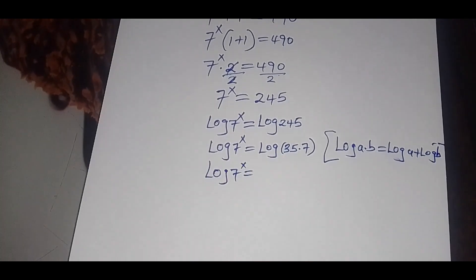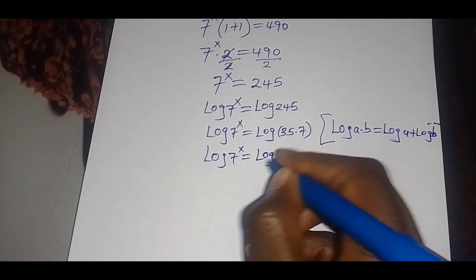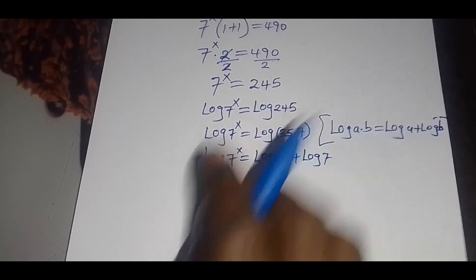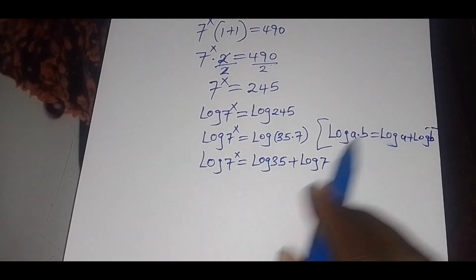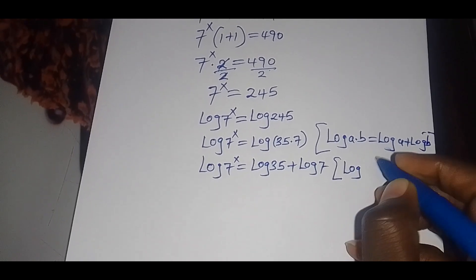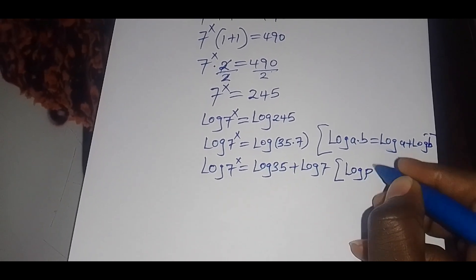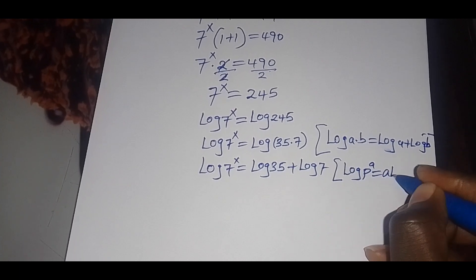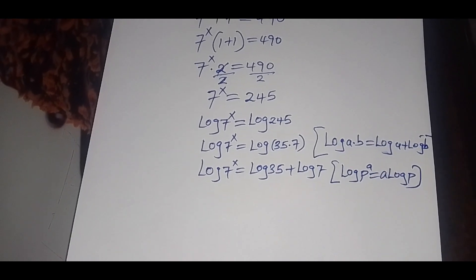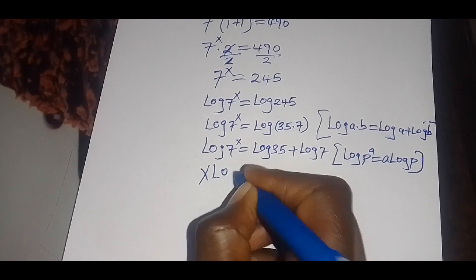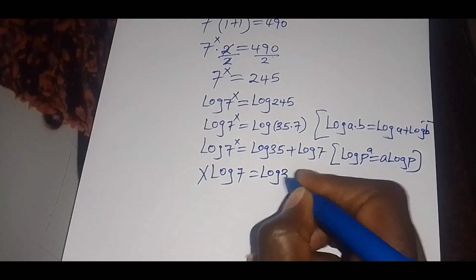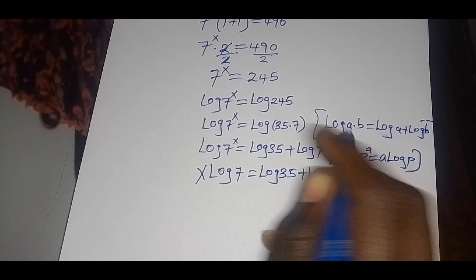So we apply this identity, so that will have log(7 raised to power x) equals log(35) plus log(7). We then apply the power rule identity which states that if you have log(b raised to power a), this can be expressed as a·log(b). So applying this property, that will give us x·log(7) equals log(35) plus log(7).